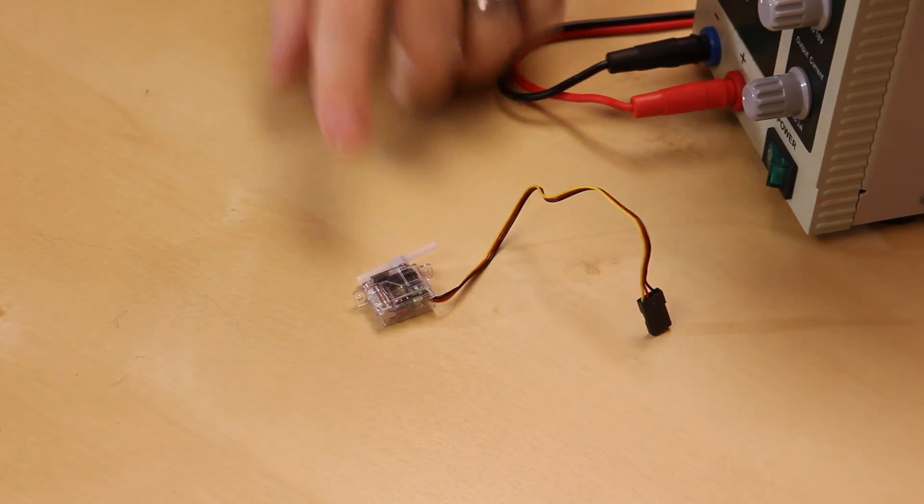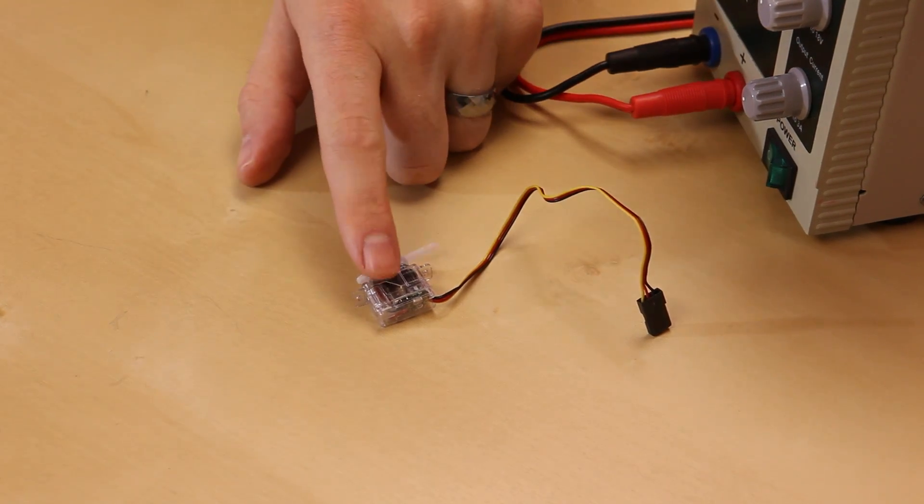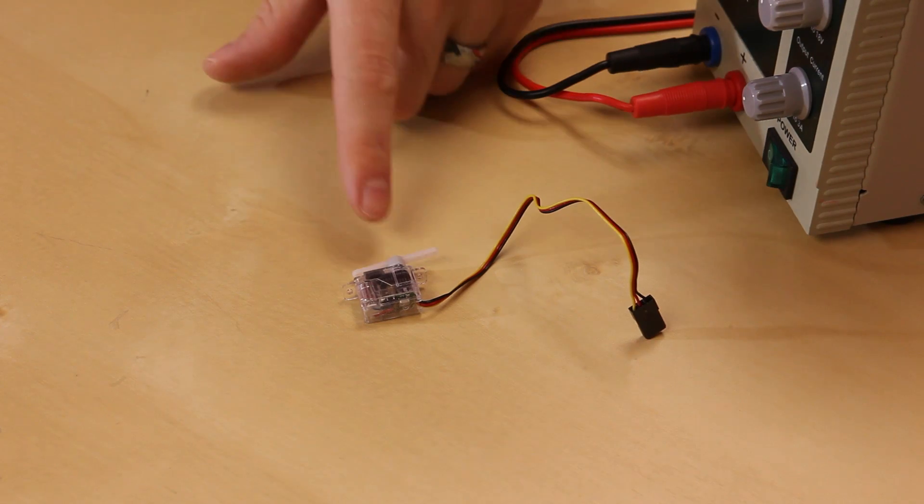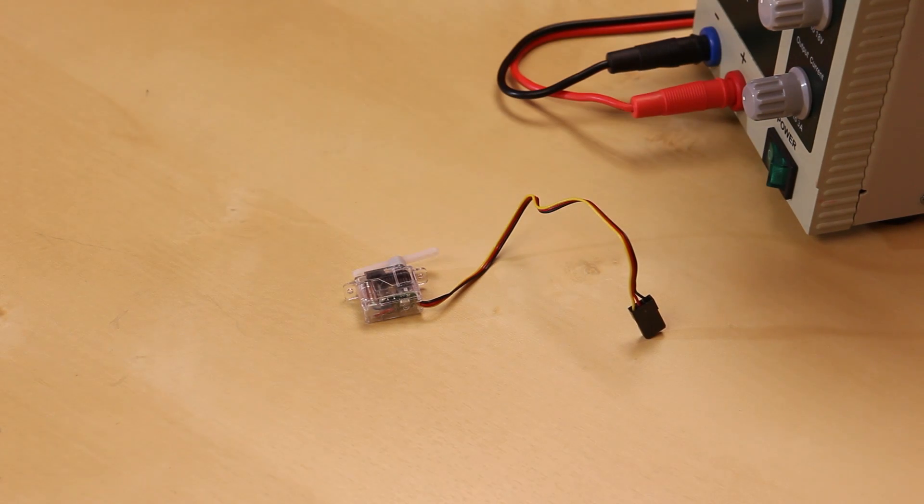This guy has 11.1 ounce inch worth of torque so it's actually pretty decent for the size. This only works at 4.8 volts so I wouldn't recommend using this at 6 volts. The other nice thing about this is it actually does have the bimetal carbonite gear so it does not have plastic gears which is pretty cool.